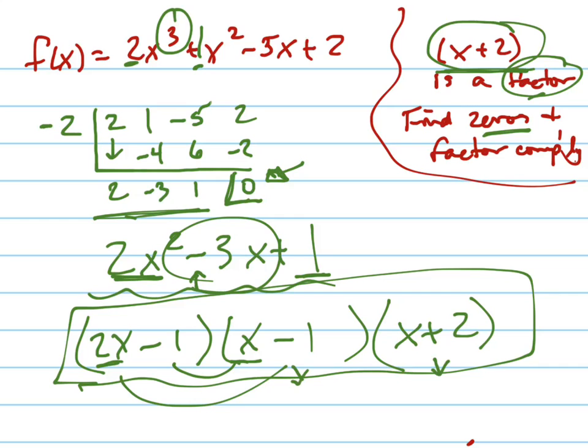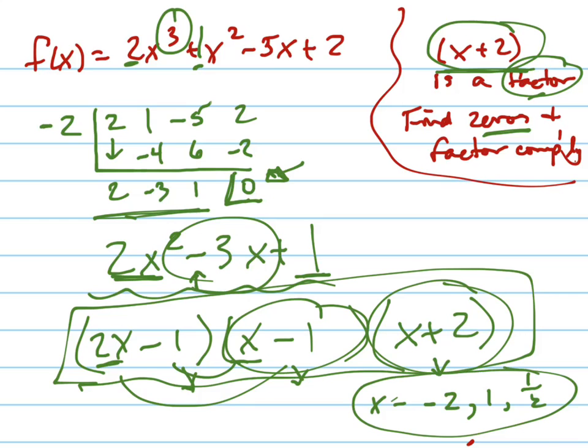And now my zeros come from those factors. Just set each one of these equal to 0 and solve. So my zeros are negative 2, that comes from that one, positive 1, that comes from that one, and positive 1 half, that comes from that first one there.